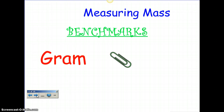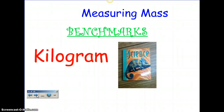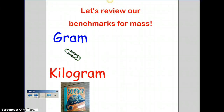Let's talk about measuring mass. A metric unit for measuring mass would be the gram, and a gram is about as light as a paperclip. Whenever you're thinking about a kilogram, that's about the weight of a textbook, like our science textbook or our math textbook. So a gram is something really small, and a kilogram is a little bit bigger. There are 1,000 milligrams in a gram, and there are 1,000 grams in a kilogram.